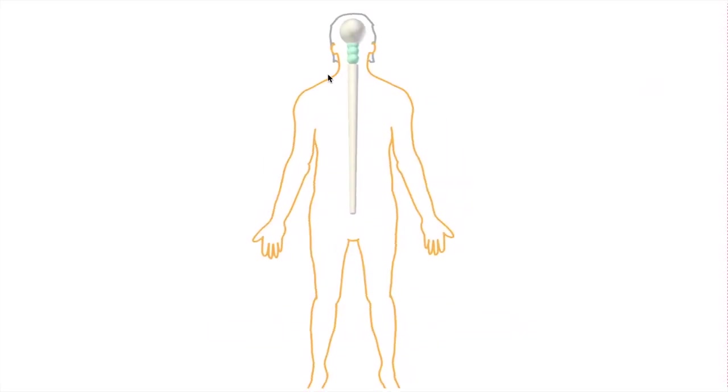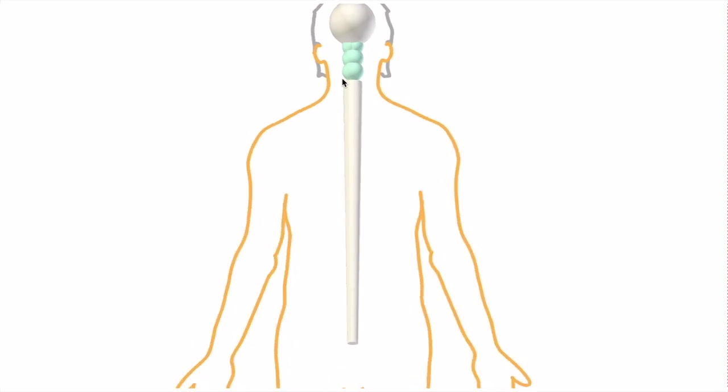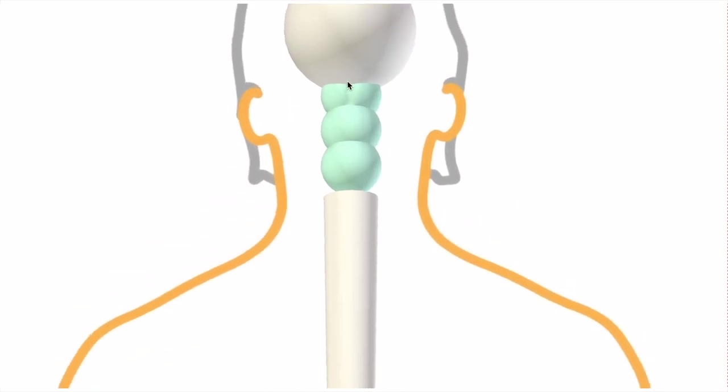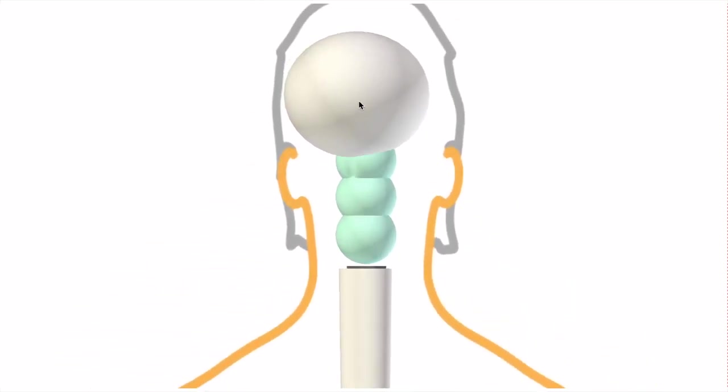So as you may know, a tract is a bundle of axons. In this video we'll be talking about three tracts that are involved in the transmission of subconscious motor signals. This being our brain, this our brainstem, and the spinal cord.